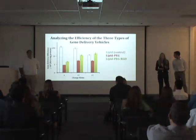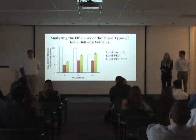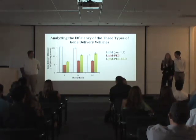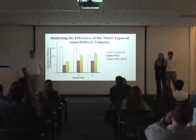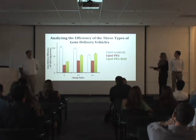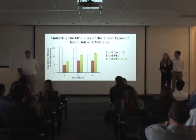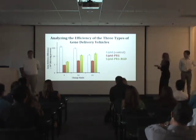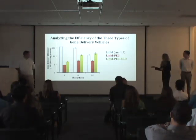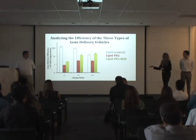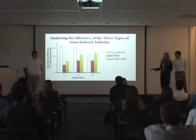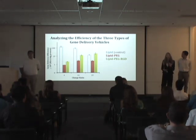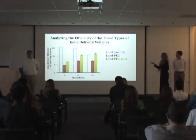Along with our qualitative results, we also have quantitative data from the luciferase assay measurements. On the vertical axis, we have how effective the three different types of delivery vehicles were at delivering the luciferase gene to the cells. For our units, we use RLU — Radiant Light Units — which measures how intense or bright the fluorescent lights being emitted in the given cells were. On the horizontal axis, we have our charge ratio and the three different types used in this experiment. Outlined in the blue column, we have our lipid, which acted as our control, and you can see it had a very high efficiency rate.